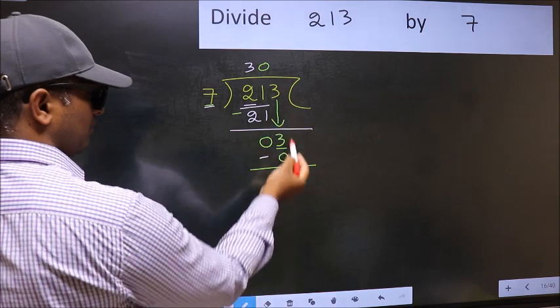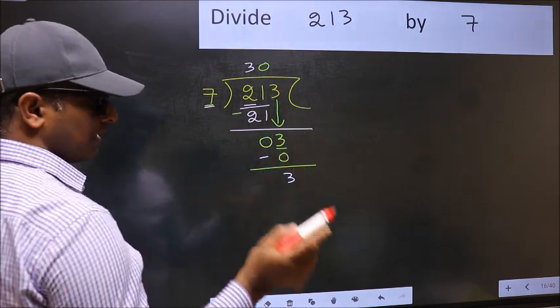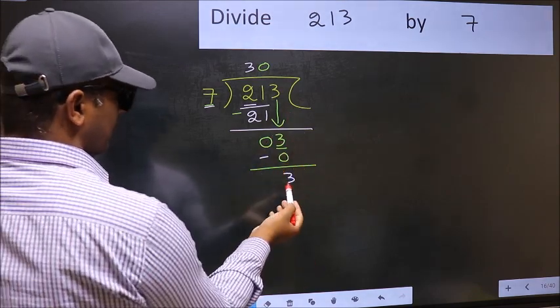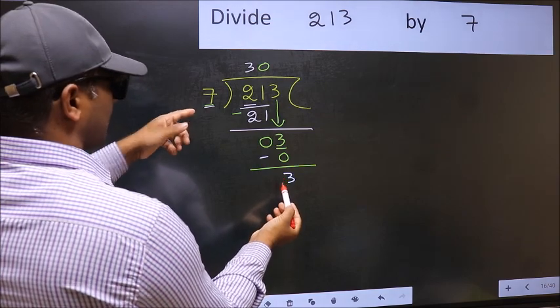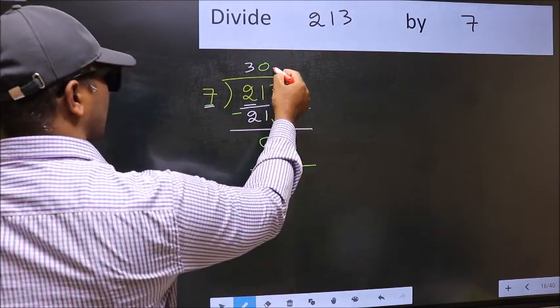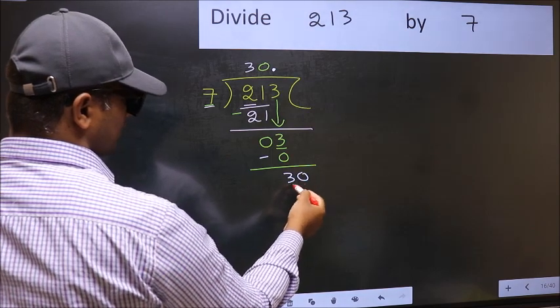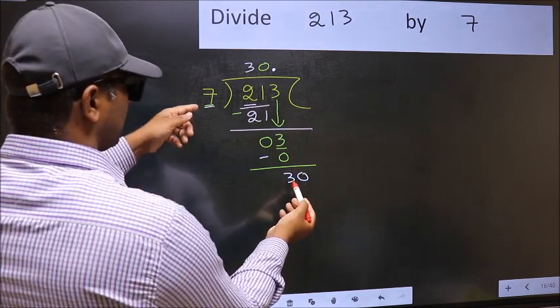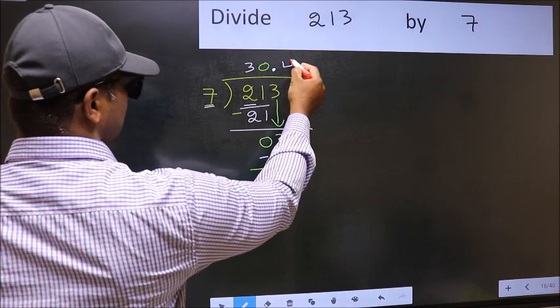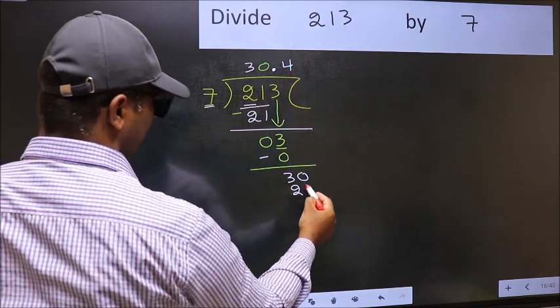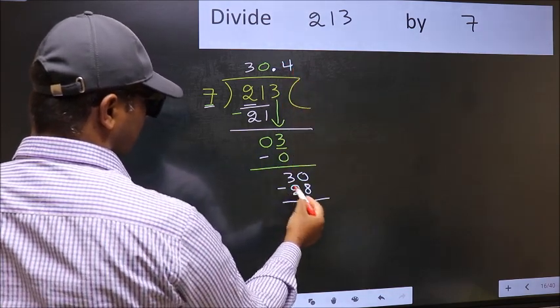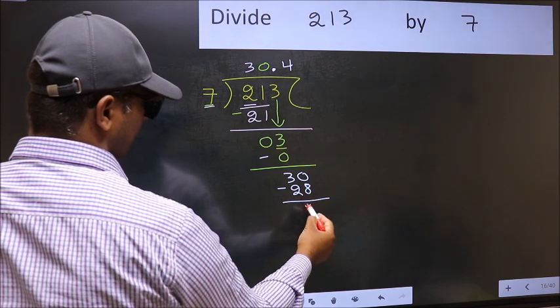Over here, we did not bring any number down. And 3 is smaller than 7, so now you can put dot and take 0. So 30. Our number close to 30 in 7 table is 7 fours, 28. Now you subtract. 30 minus 28, 2.